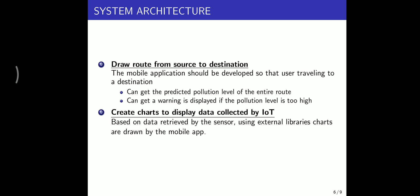Draw route from source to destination. The mobile application should be developed so that the user traveling to a destination can get the predicted pollution level of the entire route and can get a warning displayed if the pollution level is too high. Create charts to display data collected by IoT. Based on data retrieved by the sensor, using external library, charts are drawn on our mobile app.